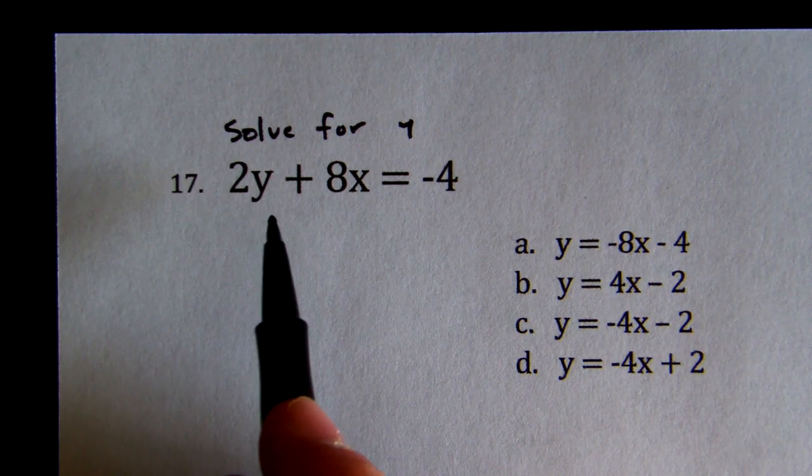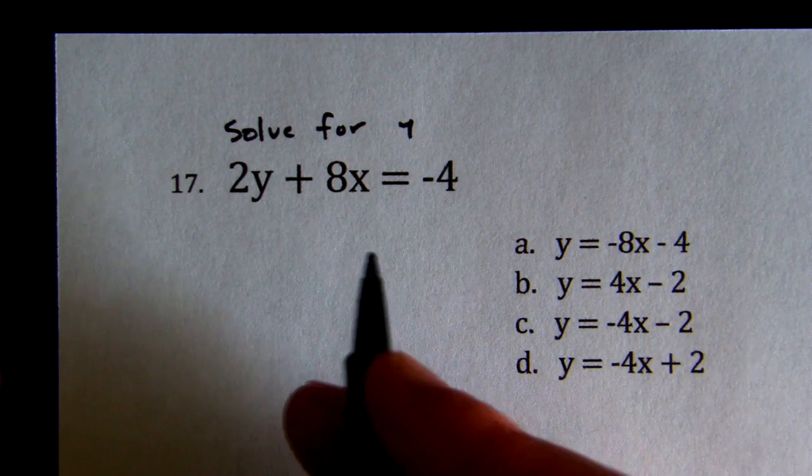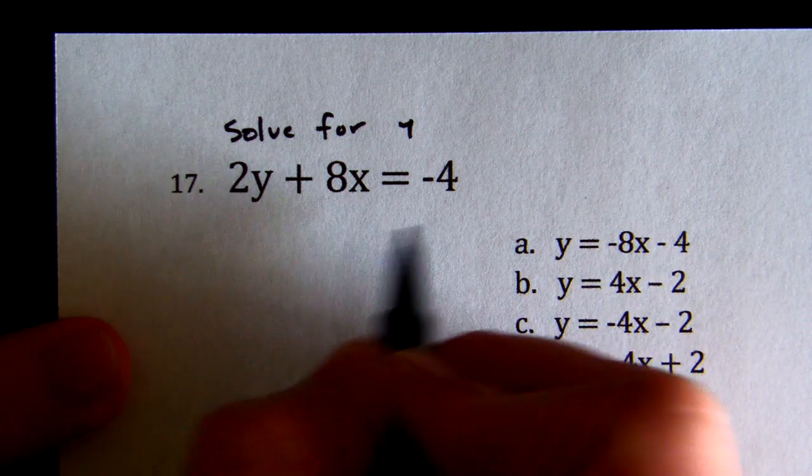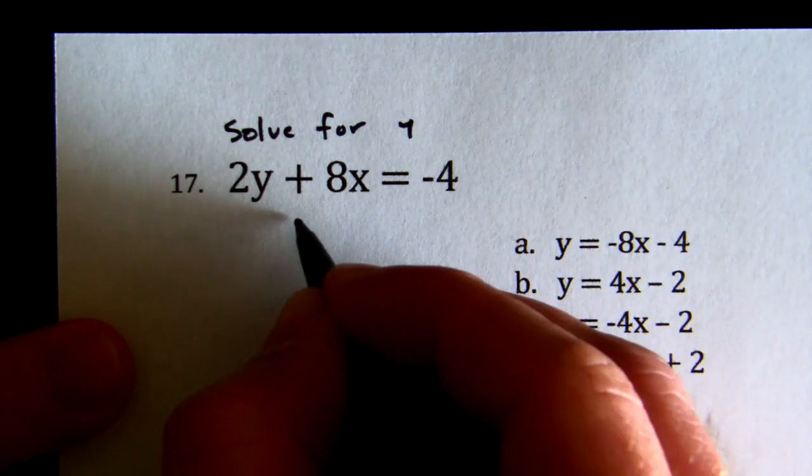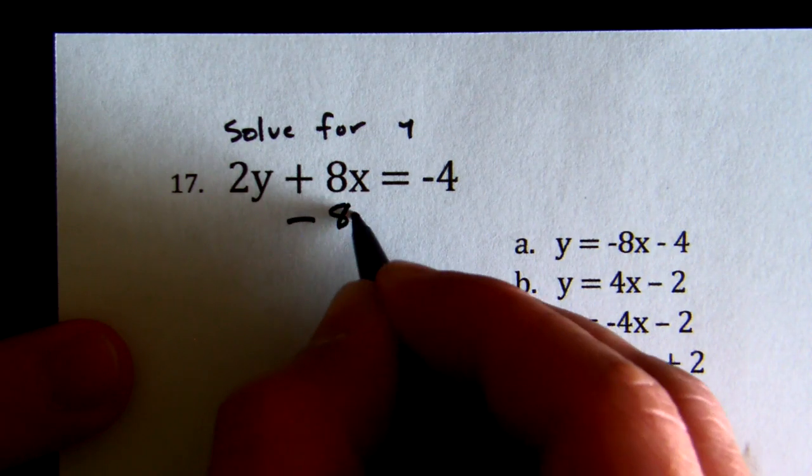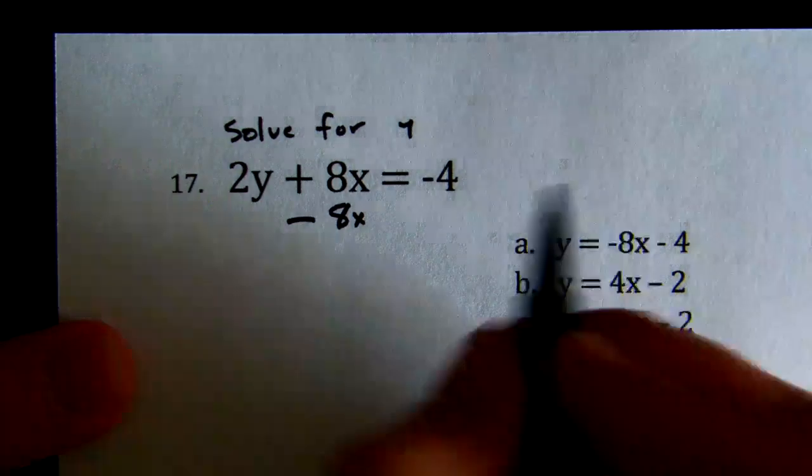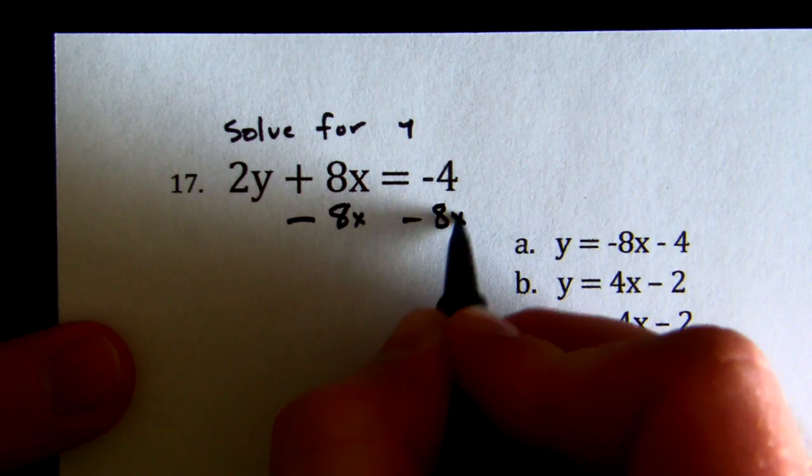I'm going to find the side that has y on it and move everything that's not a y. I'm going to move this plus 8x to this side by opposite operations. So minus 8x, that's the opposite of plus 8x, and whatever I do to one side, we've got to do to the other.